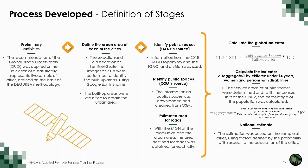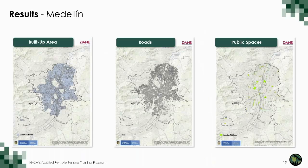Taking into account that, I will now present the results obtained using this methodology. In this slide you can see the result for Medellín, one of the cities analyzed. In the first map you can see the built-up area obtained by processing the satellite image. Second, roads obtained from cartography and blocks. Third, public space obtained using the satellite image but also OpenStreetMap.